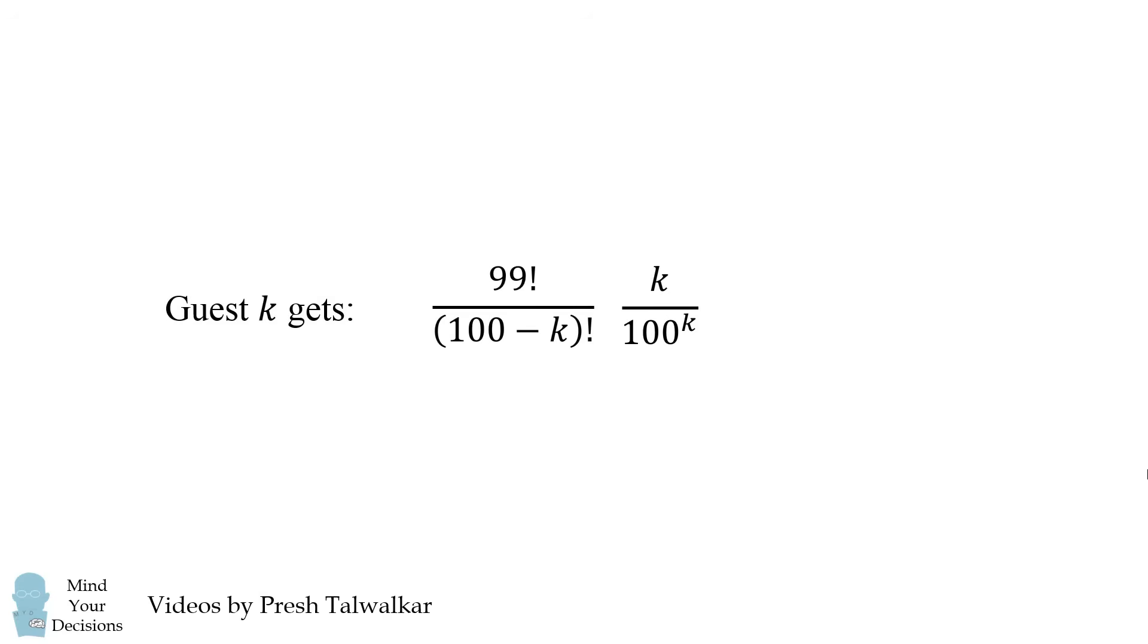Let's consider what would happen to the next person, guest k plus 1. What fraction of the entire pie is that person getting? We can solve this by incrementing the index of k in this formula.